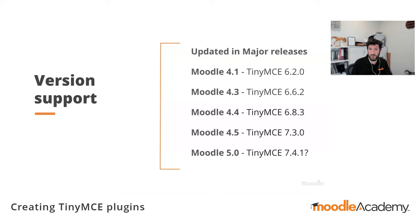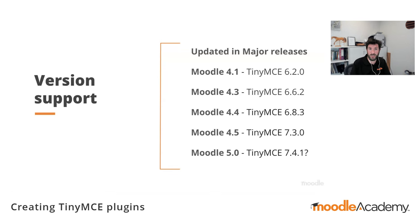When integrating Moodle with third-party software, we have a policy of stability within each release. The version of TinyMCE originally included with a specific version of Moodle does not change throughout the lifetime of that Moodle release, and we typically upgrade to the latest version of TinyMCE shortly before each Moodle release. So Moodle 4.1 included TinyMCE 6.2, Moodle 4.3 included 6.6.2, and Moodle 5.0 will have TinyMCE 7.5. On the whole the TinyMCE API is very stable and breaking changes are rare, but it's always worth reviewing the changelogs when preparing your plugin.